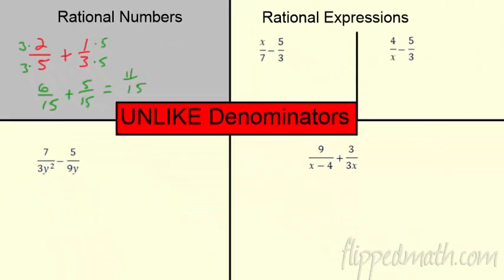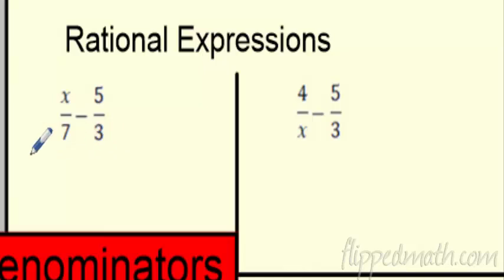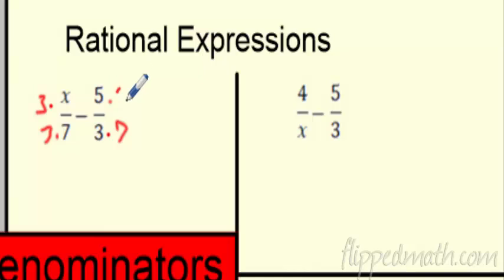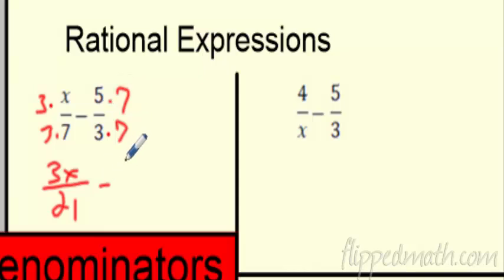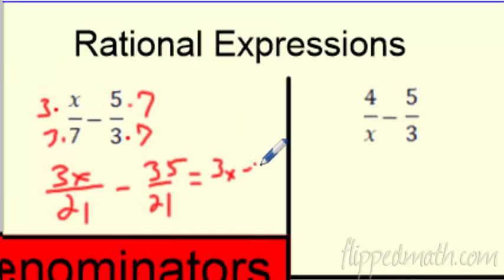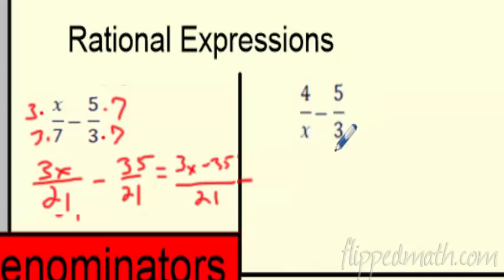Same thing with rational expressions. I need that common denominator for 7 and 3 — they can both be 21. Times this by 3, whatever you do the bottom do to the top. Times this by 7, whatever you do the bottom do to the top. So I'm looking at 3x over 21, minus 5 times 7 is 35 over 21. Now I have a common denominator and I can subtract: (3x − 35) over 21.